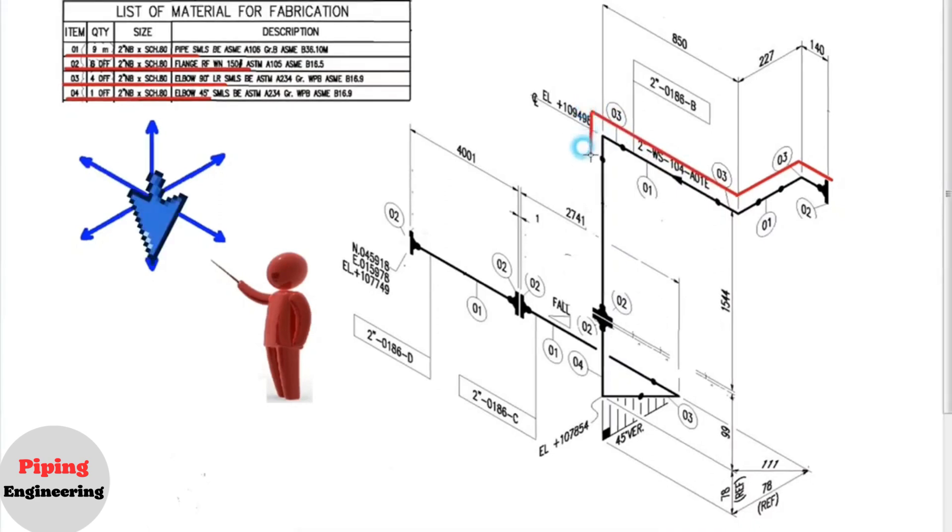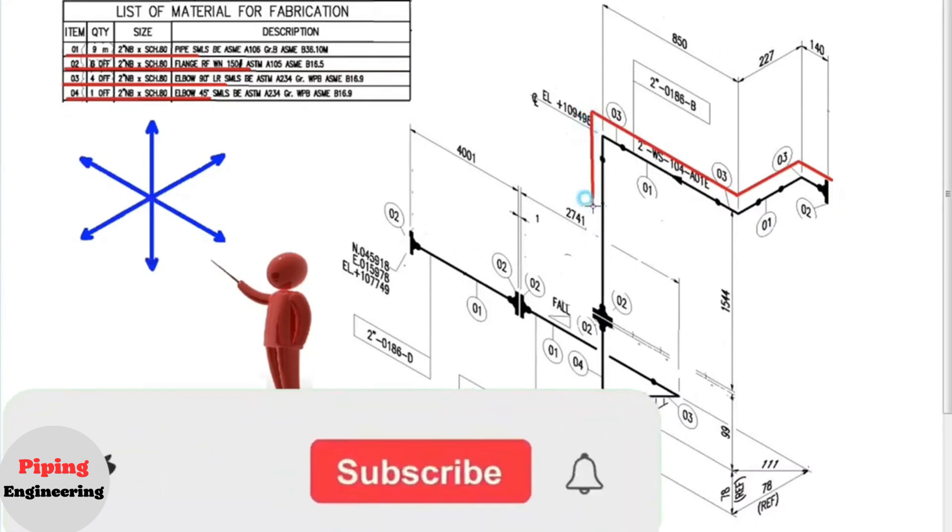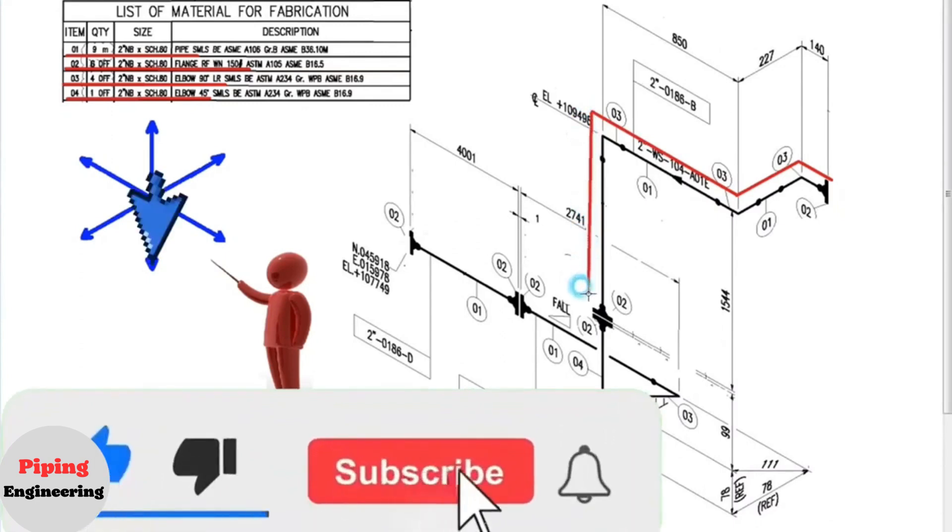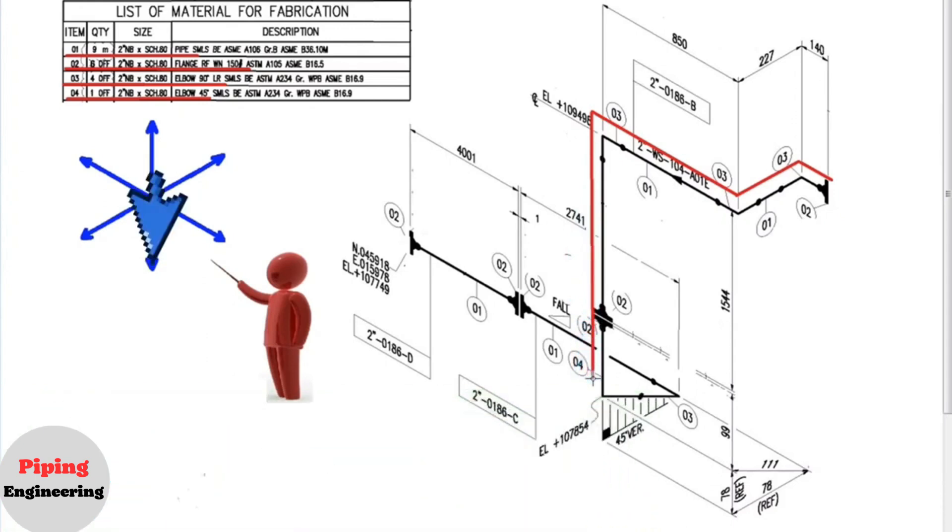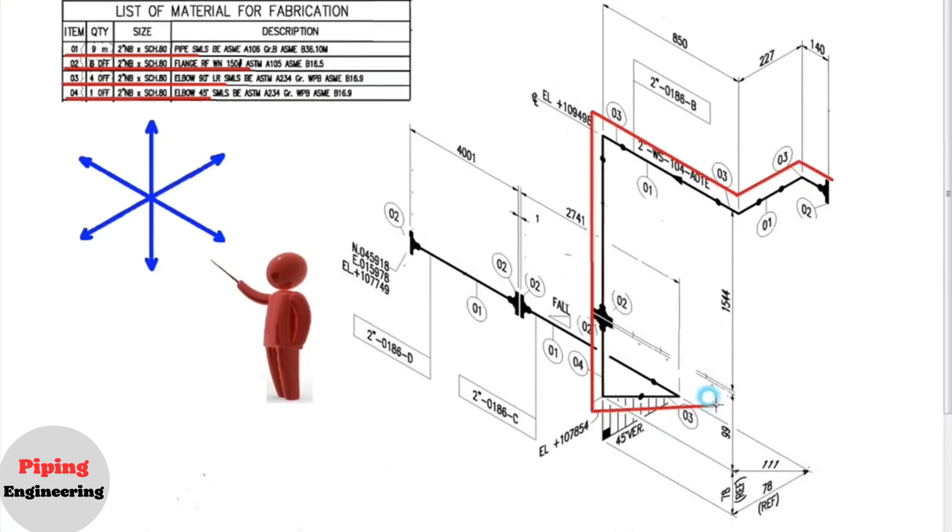Then pipe goes to down. After this point, we continue down. From this point turns east at an angle of 45 degrees. Finally, we are going to the north. We finished reading the pipe drawing.